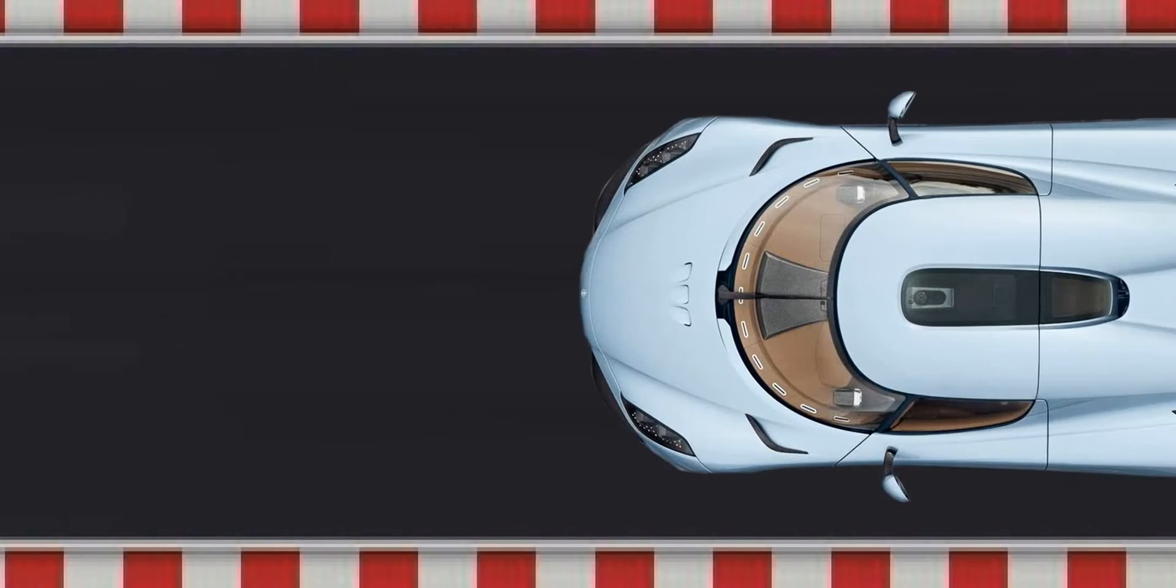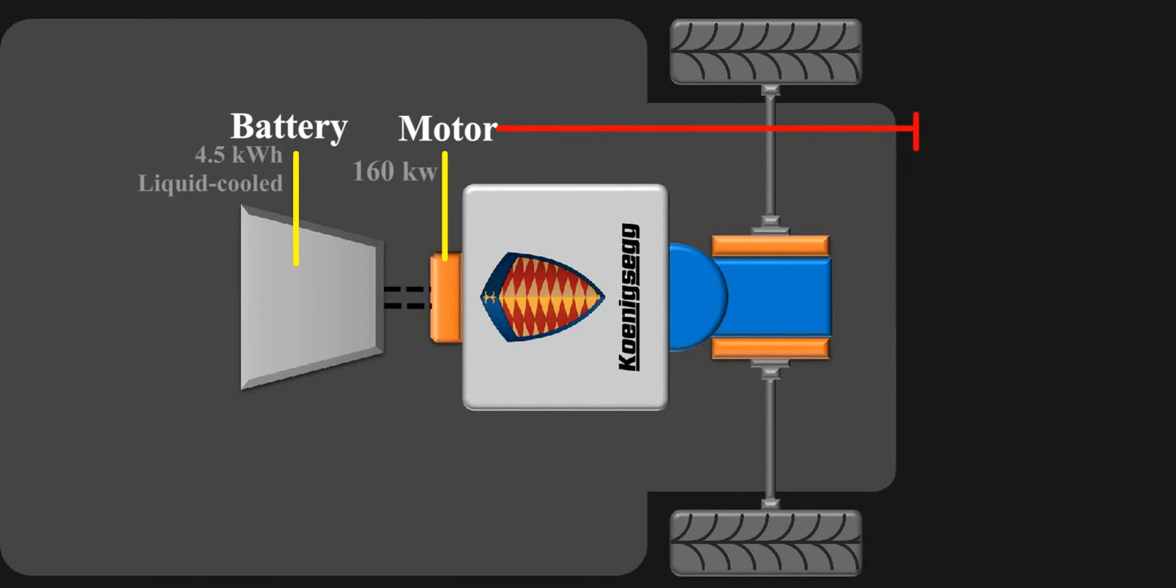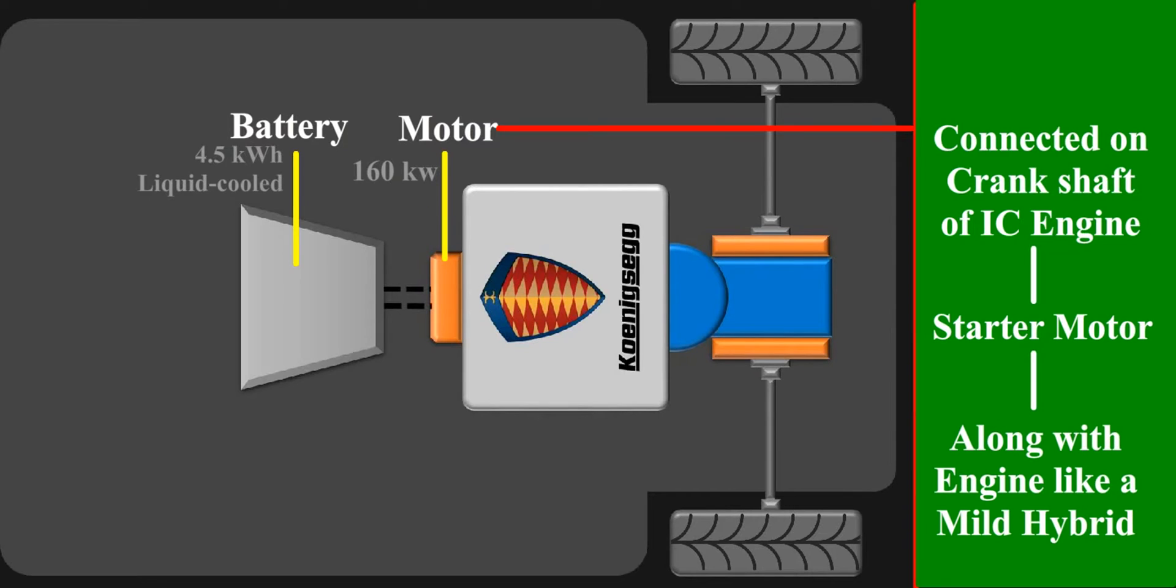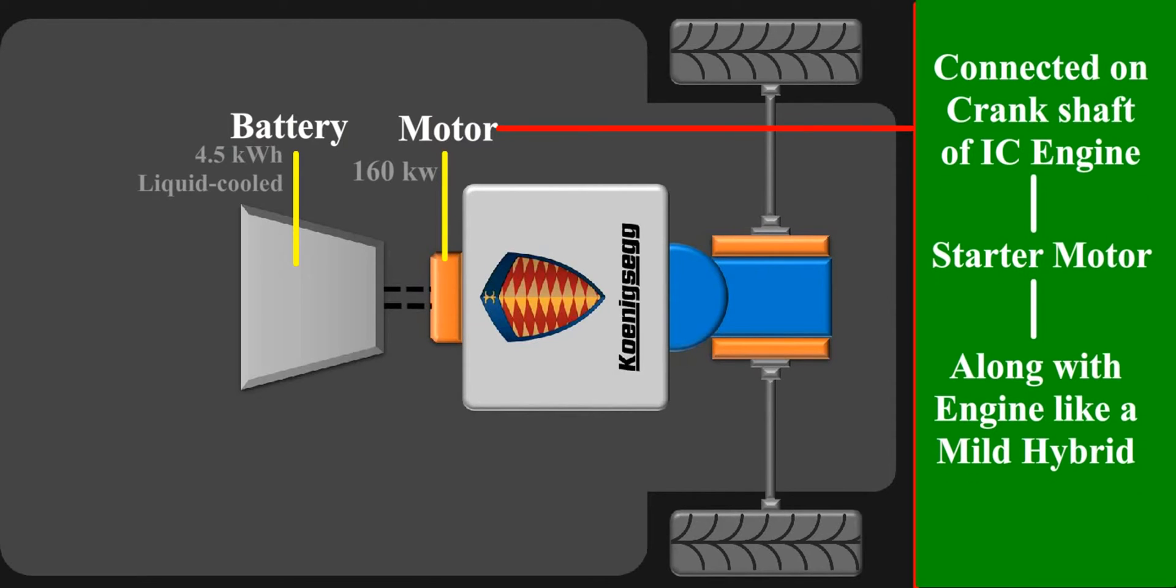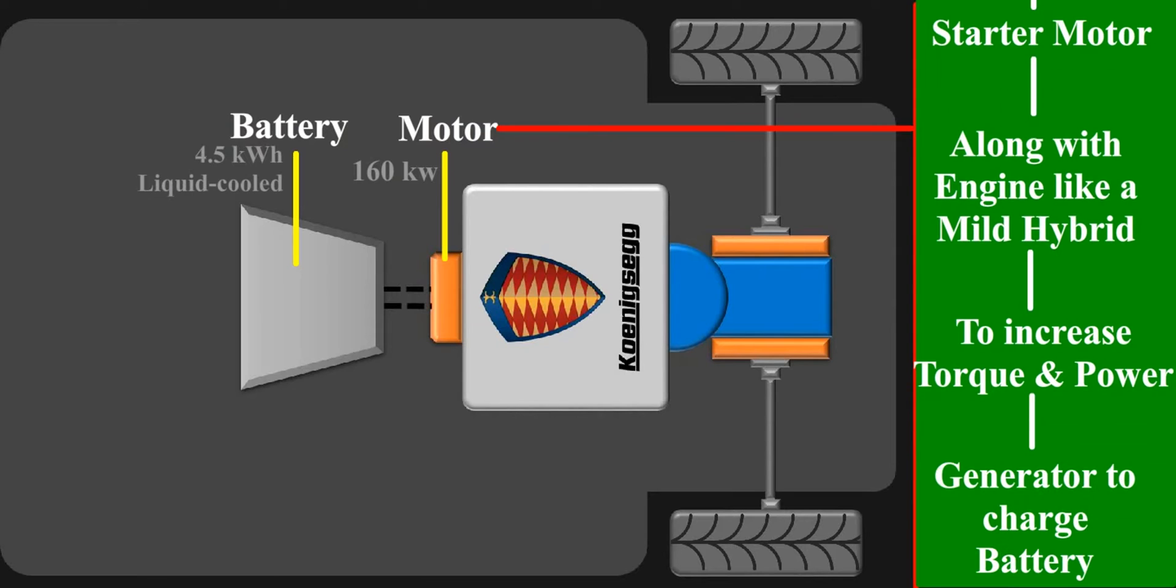The powertrain layout of Raghira is like this: the battery, then an electric motor which is directly connected on crankshaft of IC engine, which works as starter motor to start the engine, then works along with engine kind of like a mild hybrid to increase the torque and power coming out from the crank and also works as generator by which it charges the small battery.